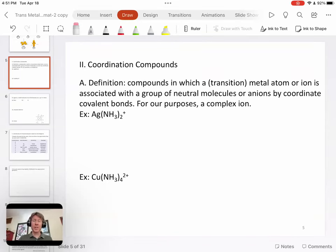Now let's talk about coordination compounds. These are compounds in which a metal atom, although for us it's going to be a transition metal atom, or ion is associated with a group of neutral molecules or anions by coordinate covalent bonds.